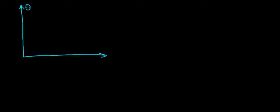Let's give two specific examples of indifference curves. We'll put apples and bananas on the axes again — quantity of apples on one axis and quantity of bananas on the other.